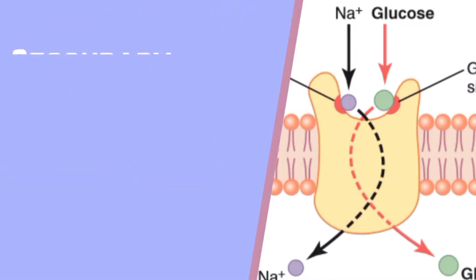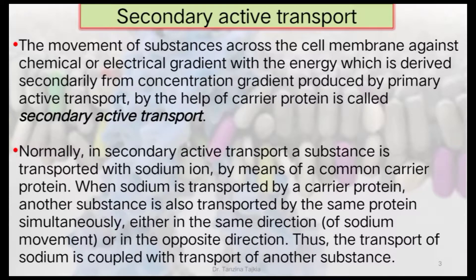Today's lecture is about secondary active transport: the movement of substance across the cell membrane against a chemical or electrical gradient, with energy derived secondarily from the concentration gradient produced by primary active transport, by the help of carrier proteins. Normally in secondary active transport, a substance is transported with sodium ion by means of a common carrier protein. When sodium is transported by a carrier protein, another substance is also transported by the same protein simultaneously.